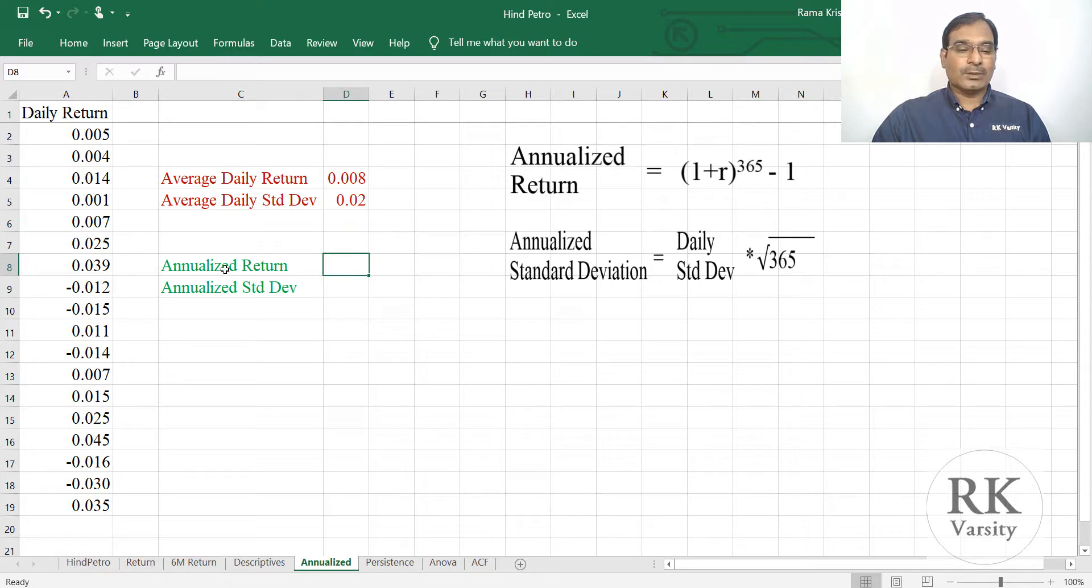Now how is that we are going to get annualized return? In case of annualized return, the equation that we use is (1 + R), that is the average daily return, rise to the power of 365 minus 1. So here your annualized return.